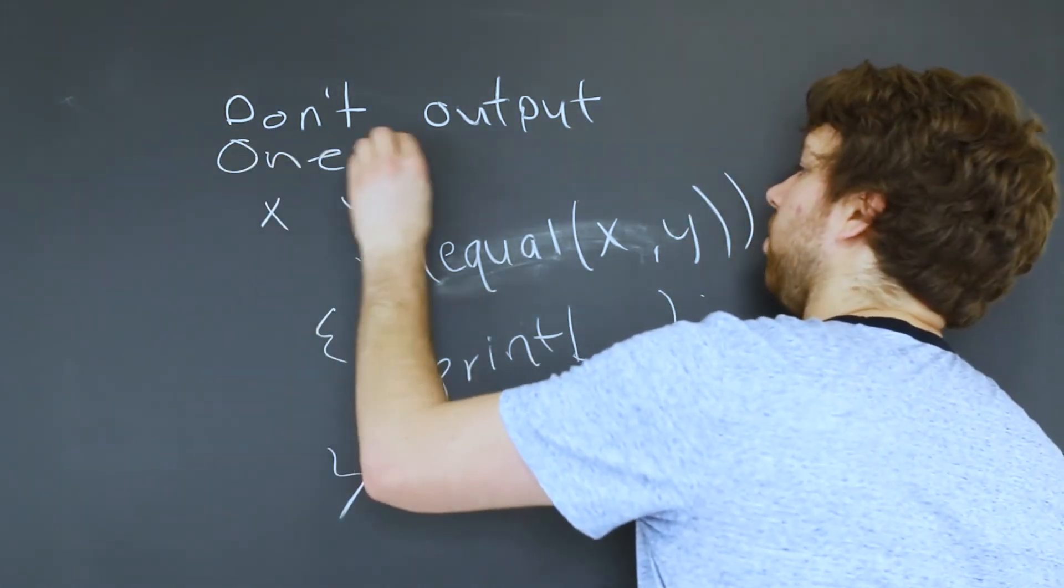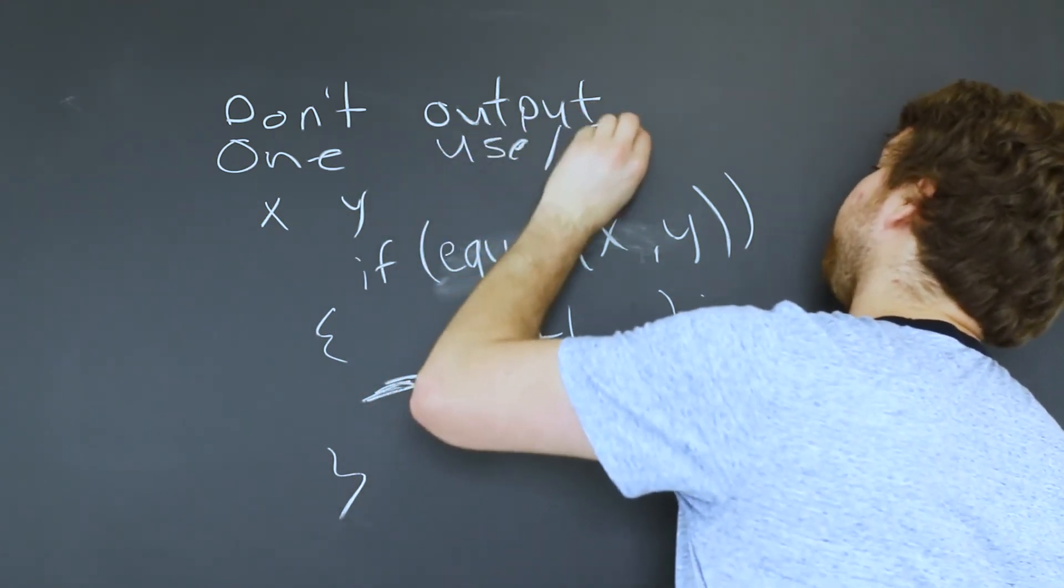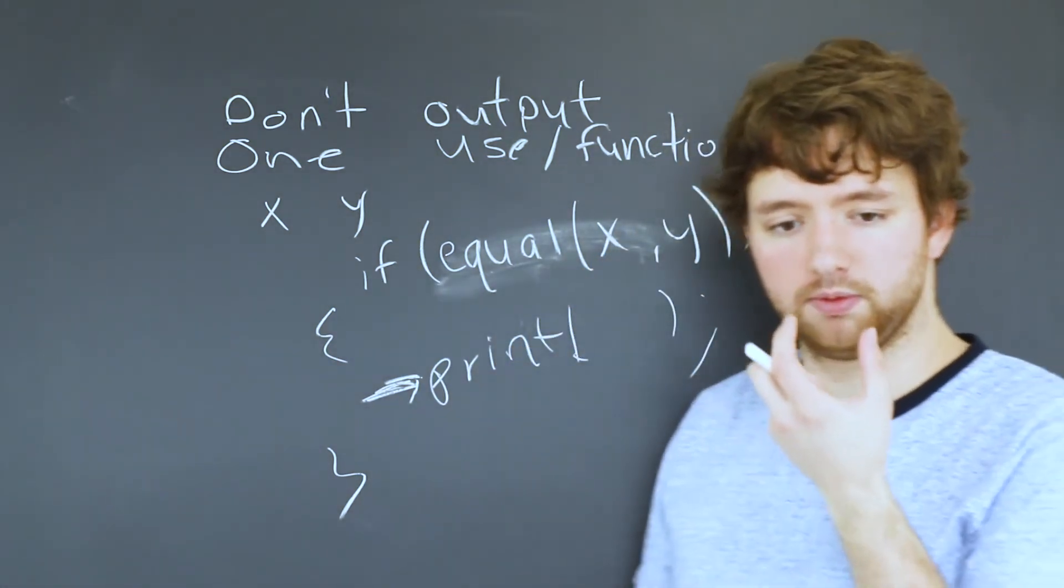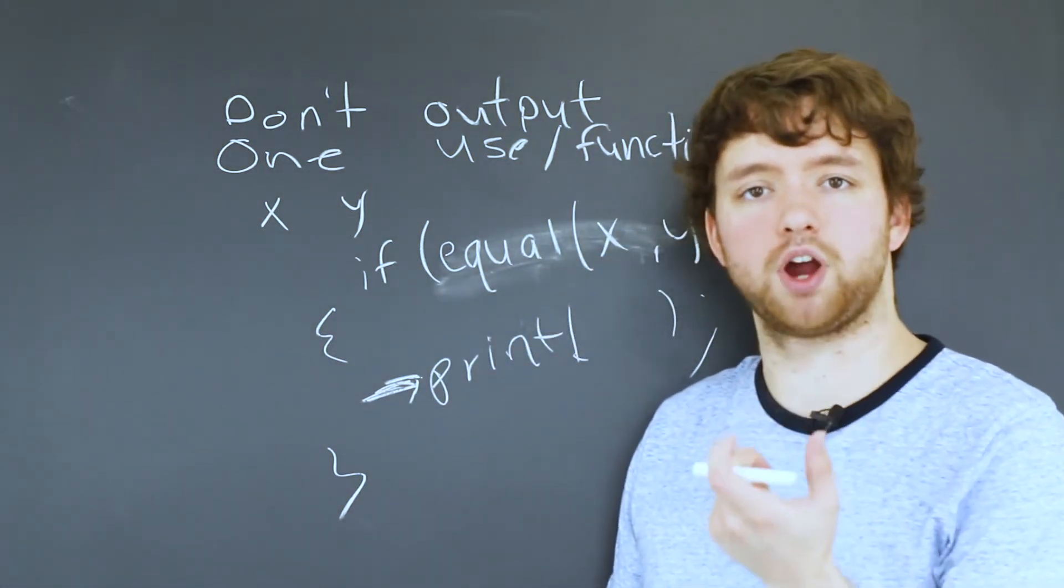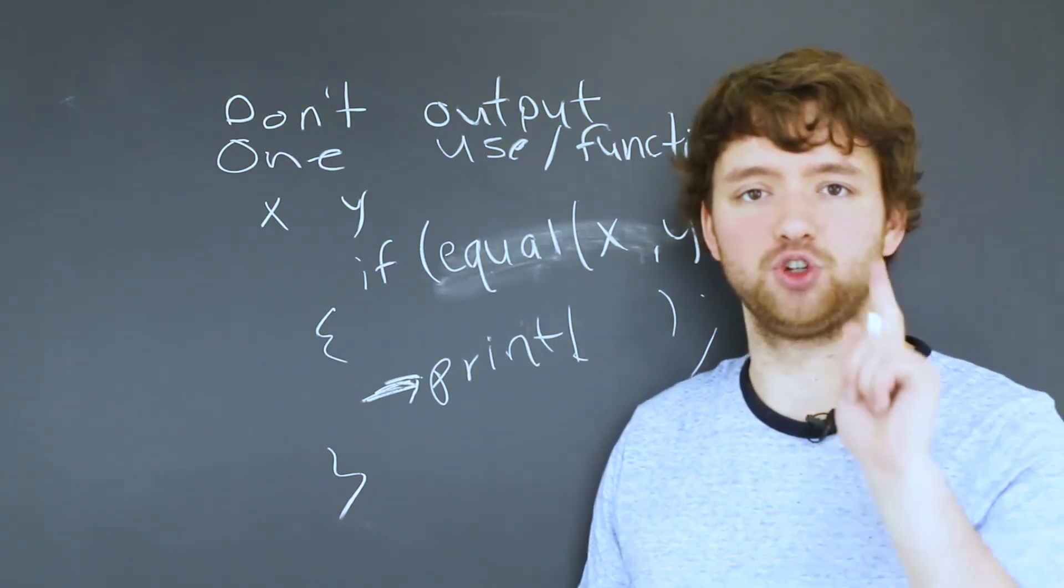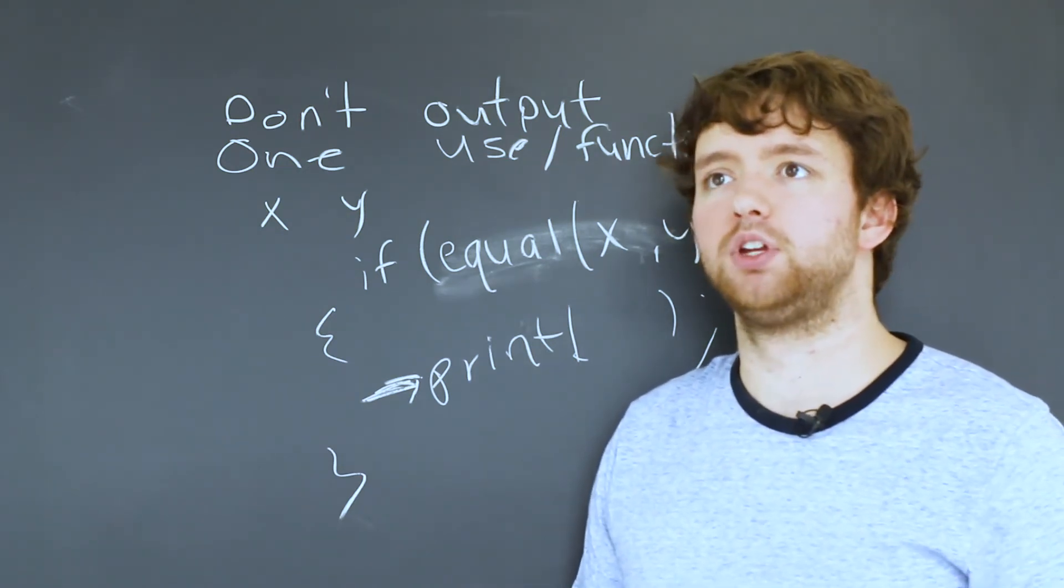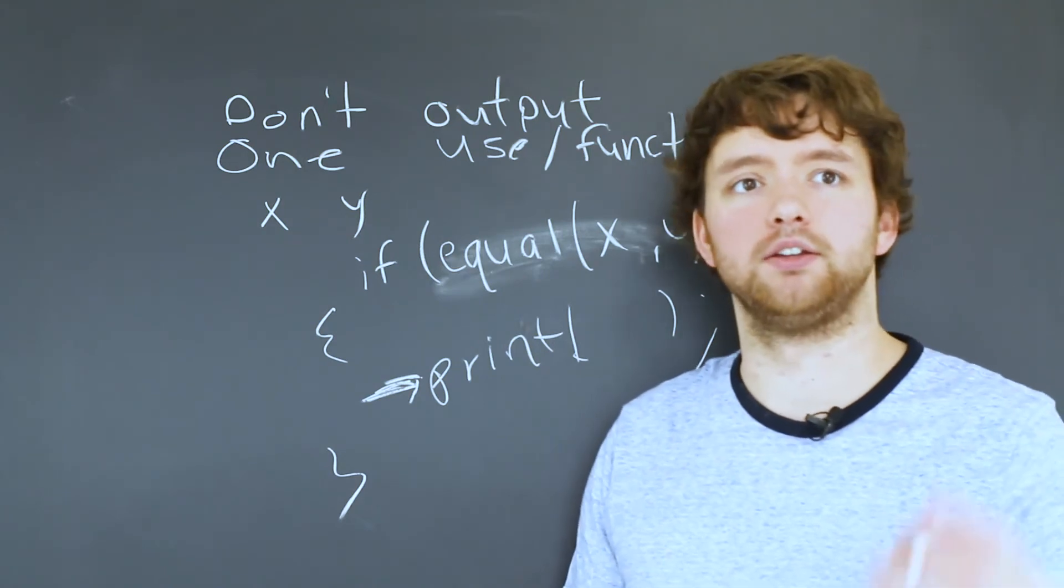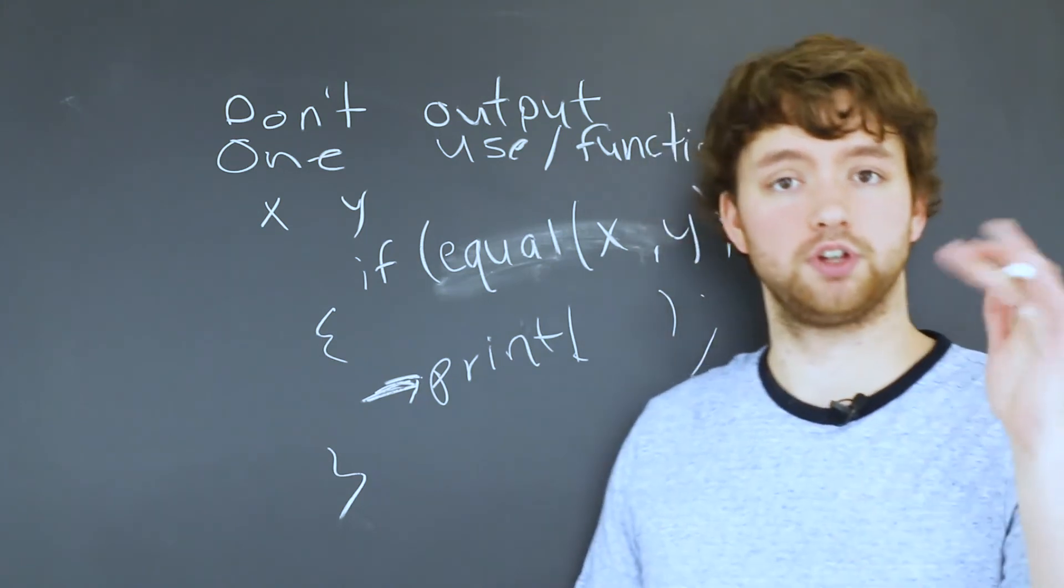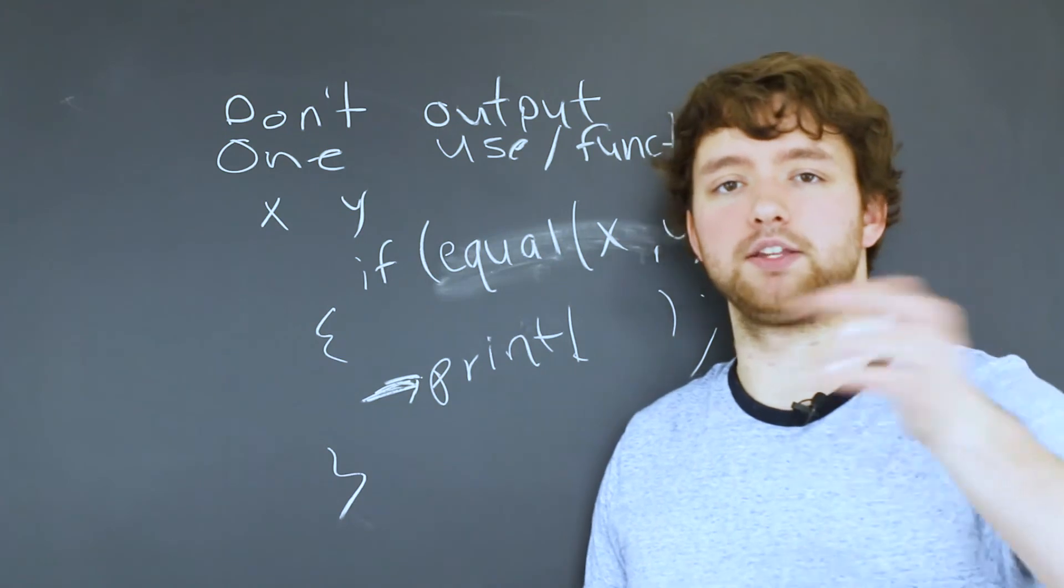Another good rule is you try to make the functions have one use or one function. The name of the function should describe what it does and it should not have the word and. It should do one thing. If you wanted to do something like sort and display, instead of doing a function sort and display, you could do two functions, sort and then another function display, and then call one after the other, passing the results of one into the input of the other.